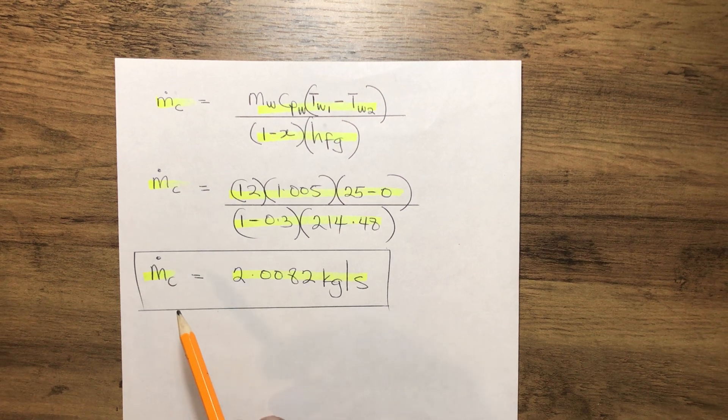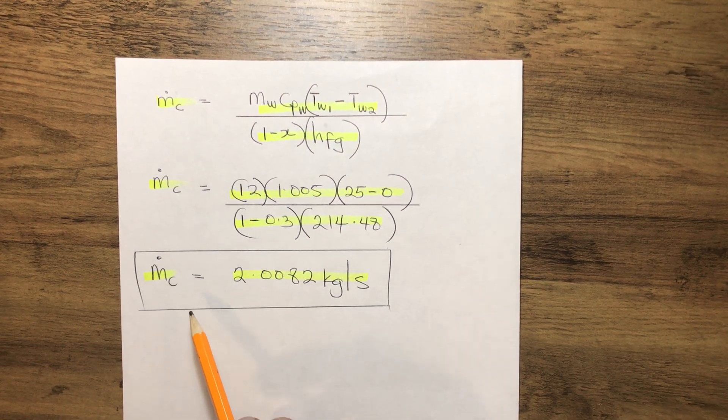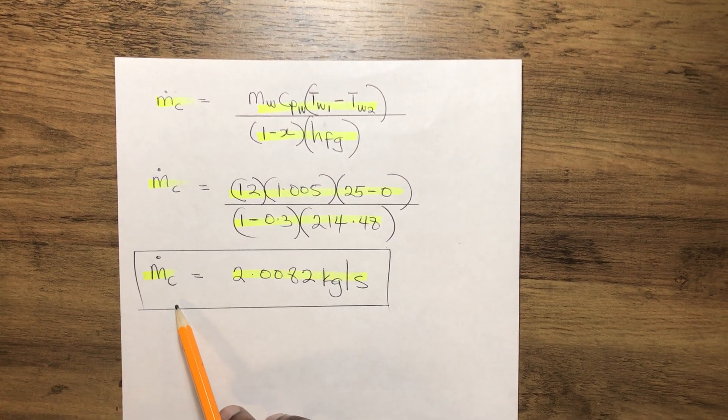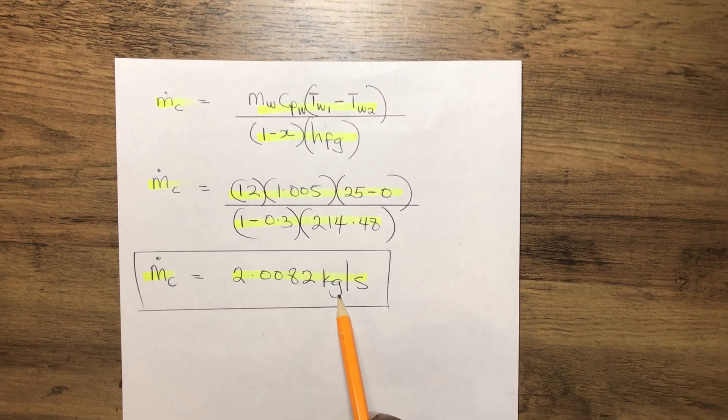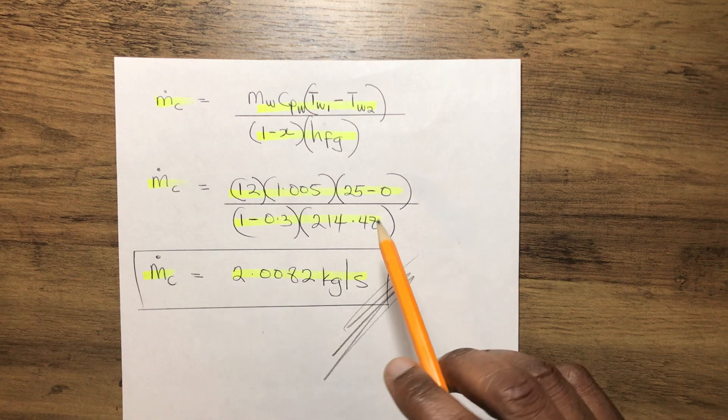So therefore, our calculated mass flow rate of the refrigerant, which is the cold fluid, gives us 2.0082 kilogram per second. Thank you.